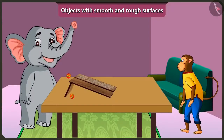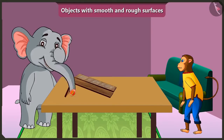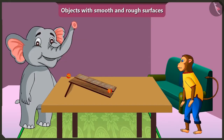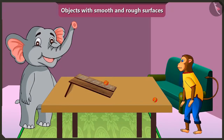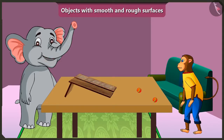Yes, now I understood. The ball rolls faster on this wooden slope because this slope has a smooth surface, which means it is very smooth. And the ball rolls slowly on this slope because this slope has a rough surface, which means its surface is very rough. Well done, Appu!